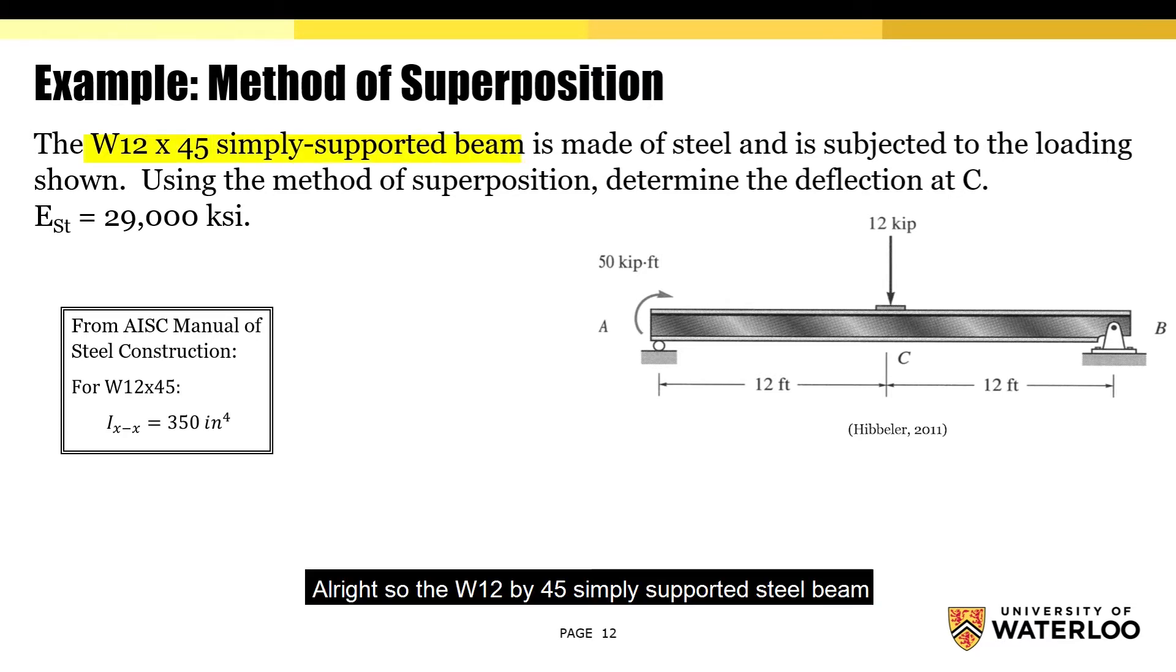Alright, so the W12x45 simply supported steel beam is subjected to a moment at point A and a point load at point C. The question is asking us to figure out the deflection at C through the method of superposition. We're told that E is equal to 29,000 KSI and I is equal to 350 inches to the power of 4.